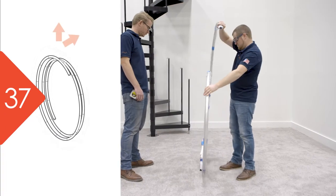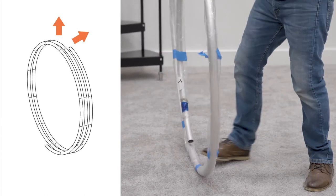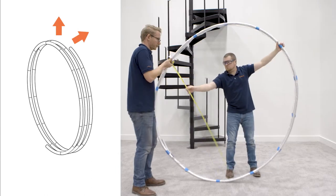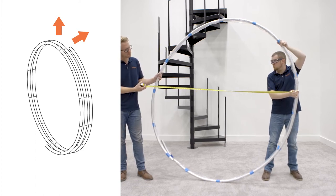You will need to open the handrail coil to a diameter one foot larger than the diameter of your staircase. In this case, we will open it to six feet, since our diameter is five feet.